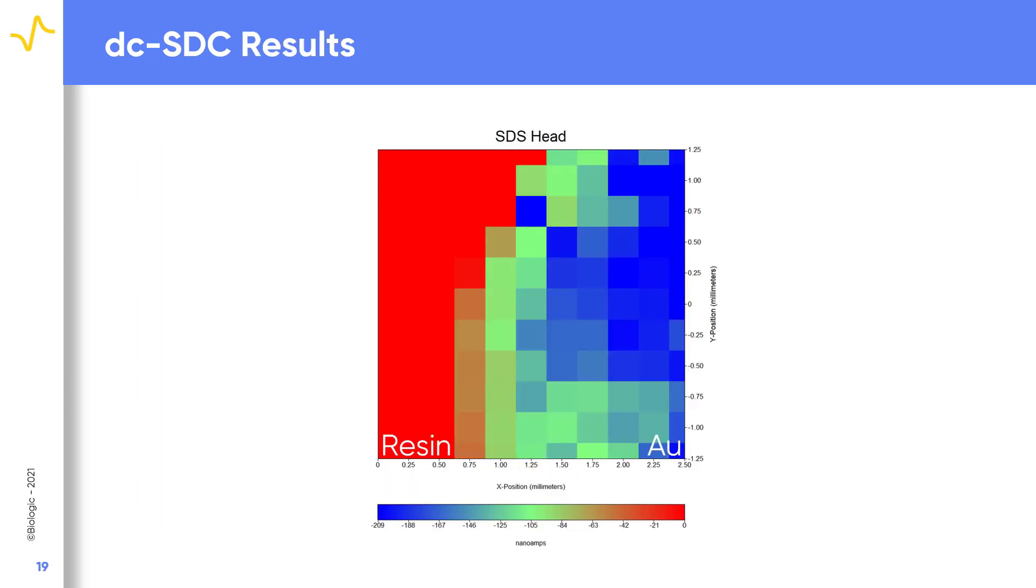When this measurement is performed, we see a clear region of high current magnitude over the gold. Because the resin is an insulator and cannot behave as a working electrode, zero current is measured when the probe is in this region.